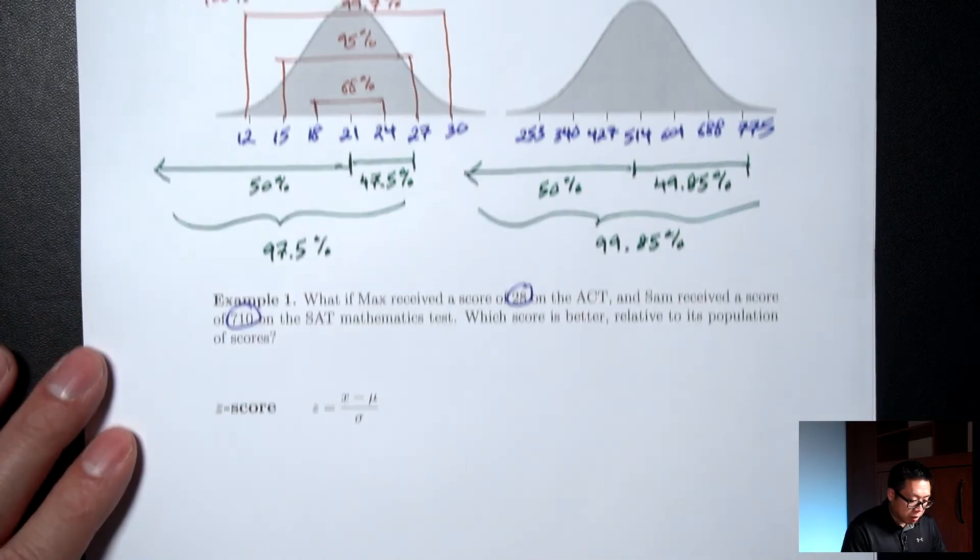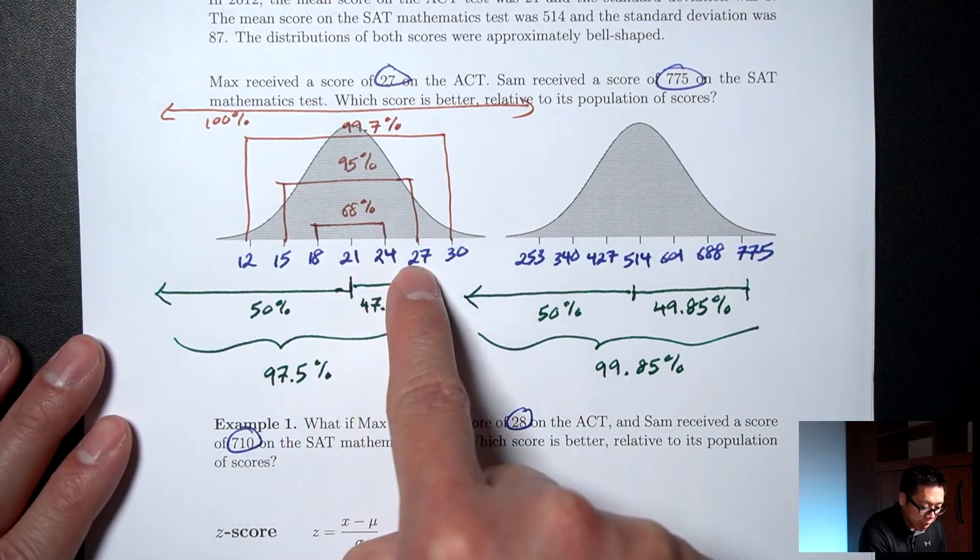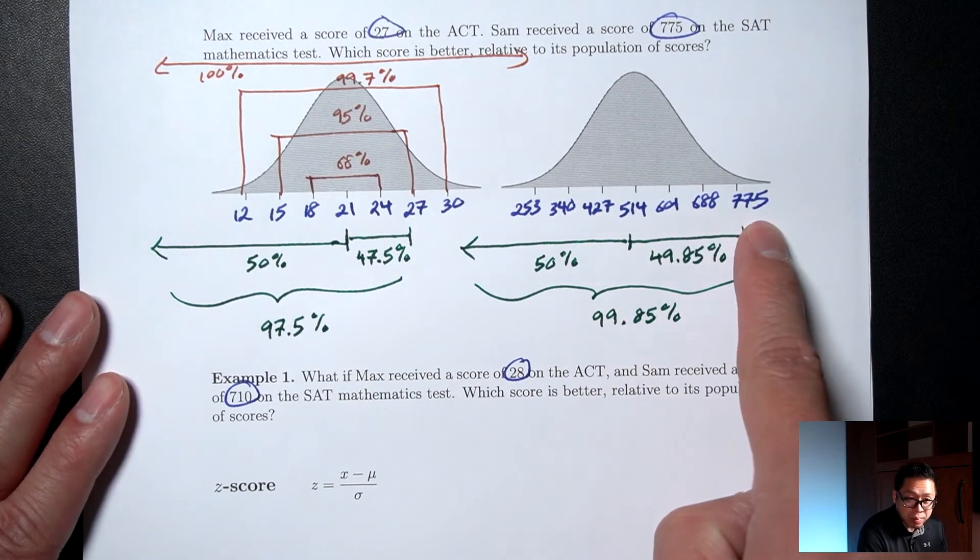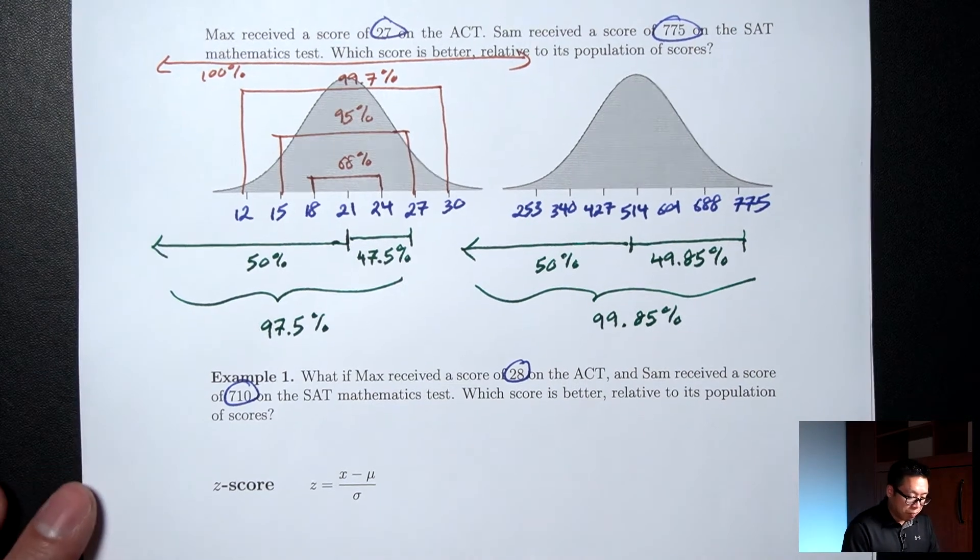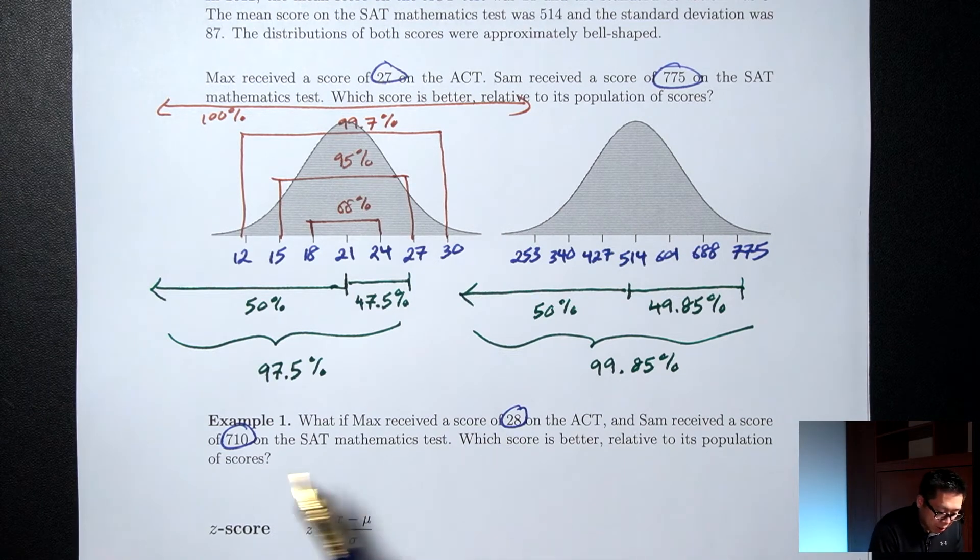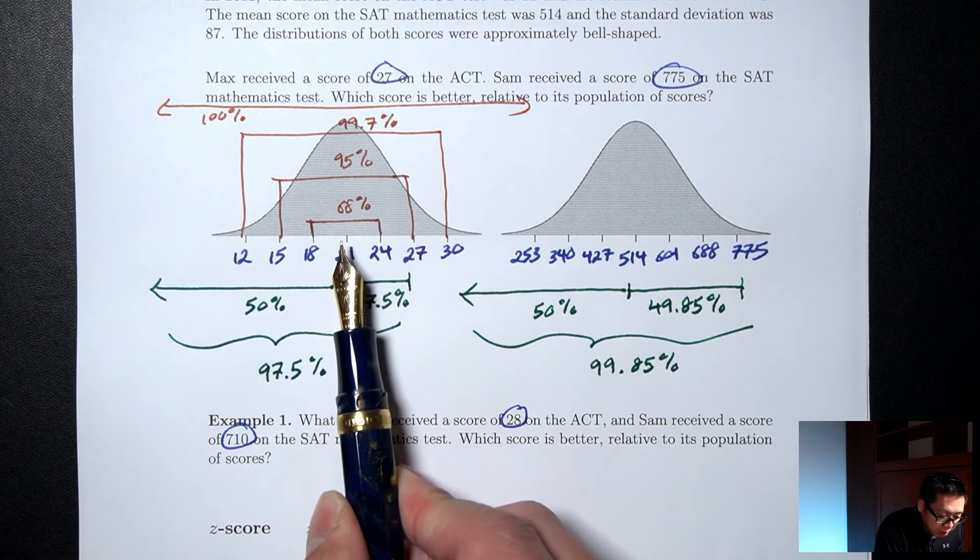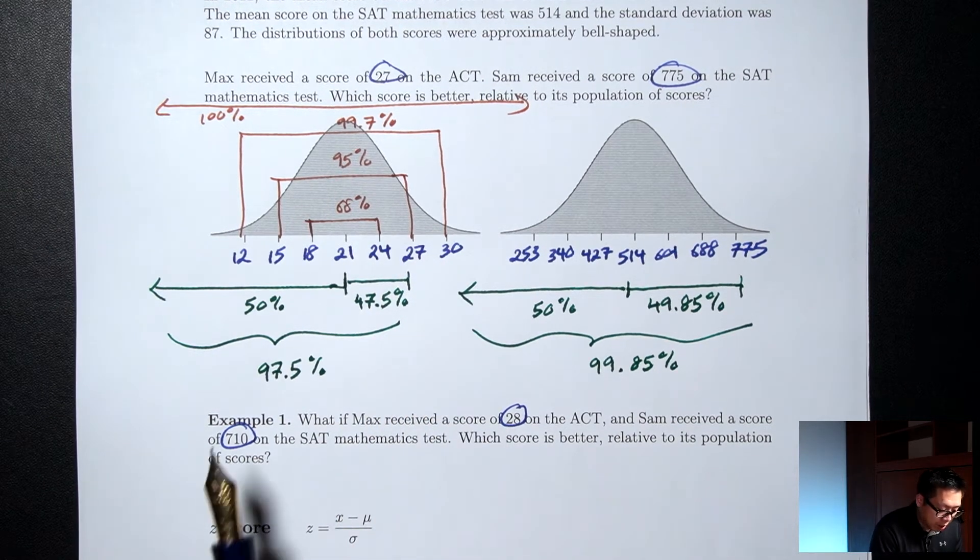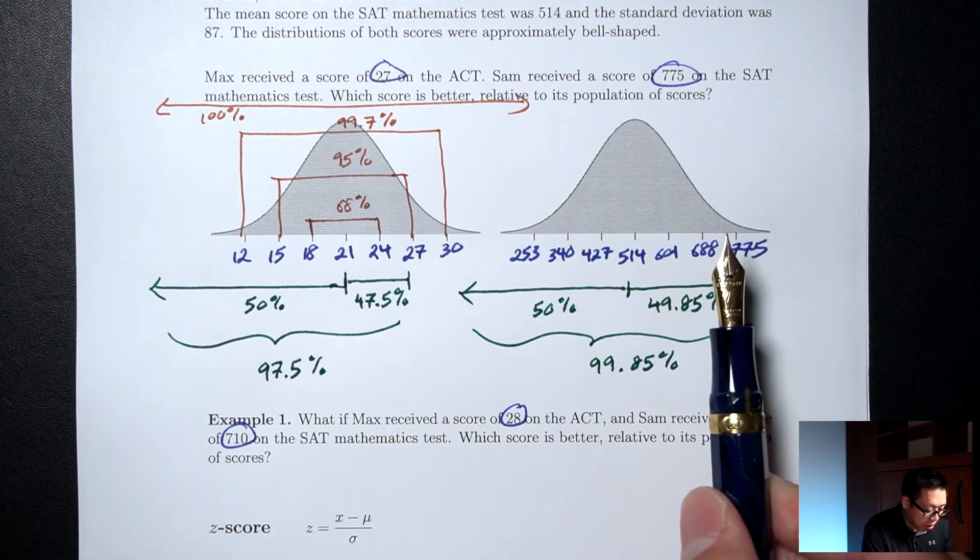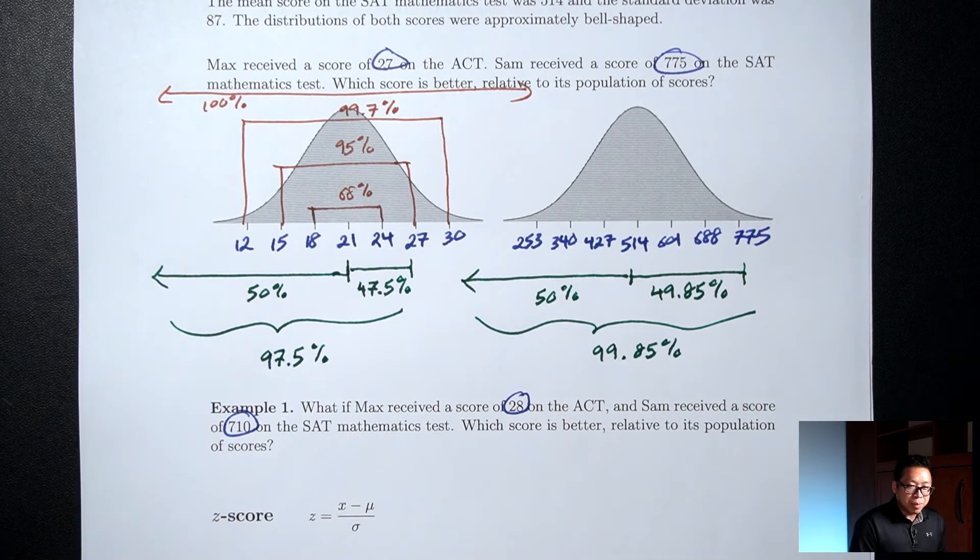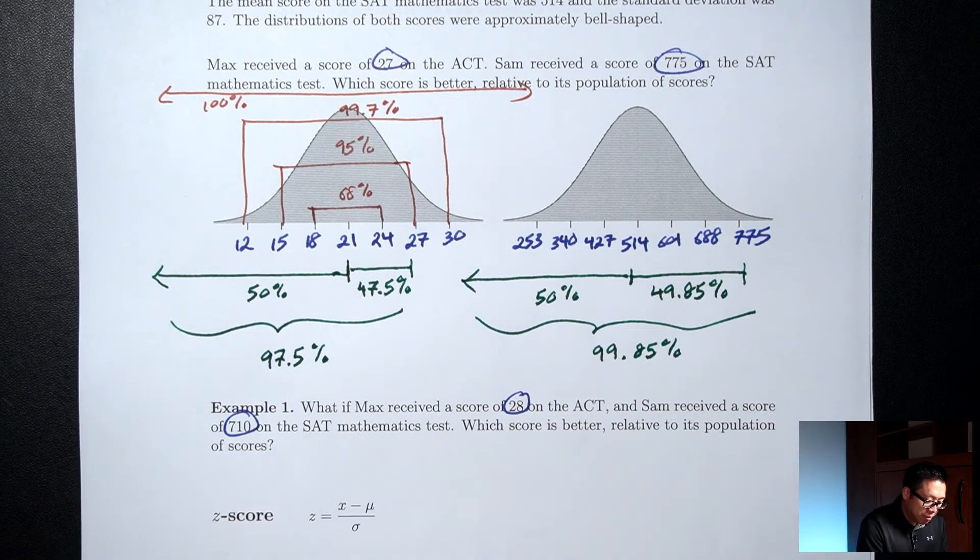So now it's a little bit harder because notice that 28 is not one of the steps. 710 is not one of the steps. So our argument doesn't quite work now. But the question is, which one is farther to the right, the 28 or the 710? Well, the 28 is somewhere between 2 steps and 3 steps above. The 710 is also somewhere between 2 steps and 3 steps above. So 28 and 710, we want to know which one is farther to the right, but they're kind of in similar places. So what do we do?